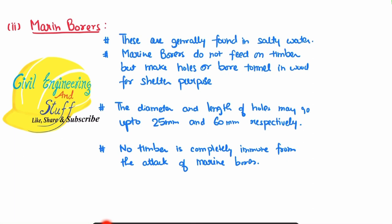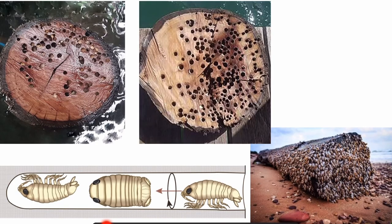Next we have marine borers, which are generally found near salty water. They do not feed on the timber but drill holes and use them for shelter purposes. The diameter and length of holes that marine borers drill are 25 mm and 60 mm respectively. Conventionally, no timber is perfectly immune from the attack of marine borers. Here we can see an example of timber attacked by marine borers — they drill holes of 25 mm diameter and 60 mm in length, and you can see the extent to which they can decay the overall timber surface.